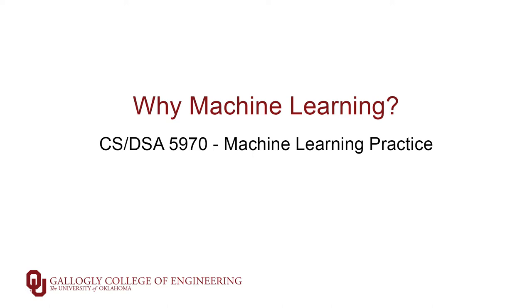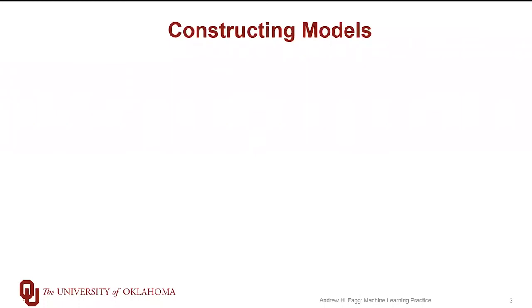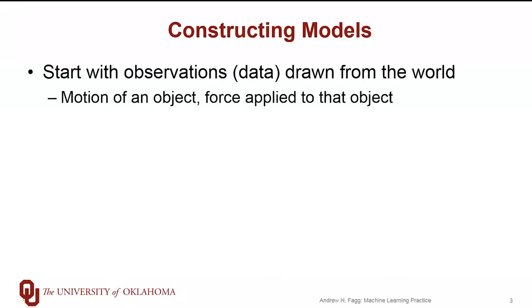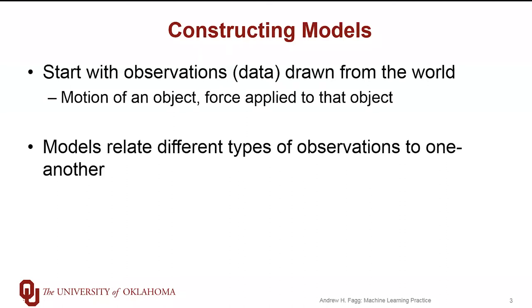Before we get into machine learning itself, I want to talk a little bit about models in general. Scientists and engineers have had a very long history of building models, and typically the process of constructing models starts with collecting a set of observations that come from some data source. For example, we might observe the movement of an object as well as the forces being applied to that object. A model relates the different types of observations to one another. Newton, several centuries ago, made the observation that there's a linear relationship between the acceleration of an object and the forces being applied to that object.